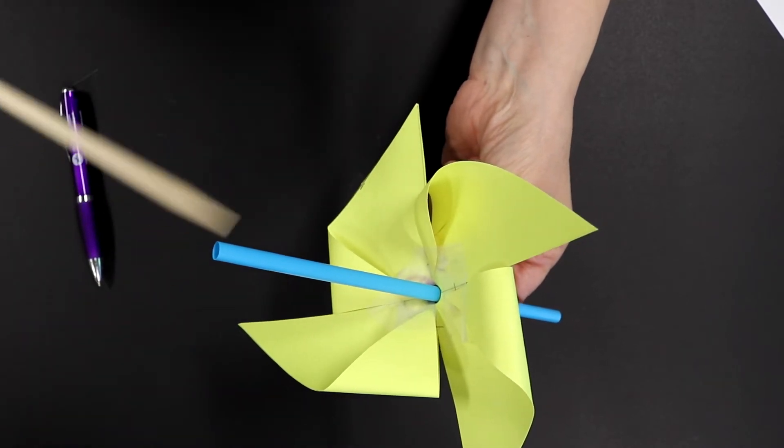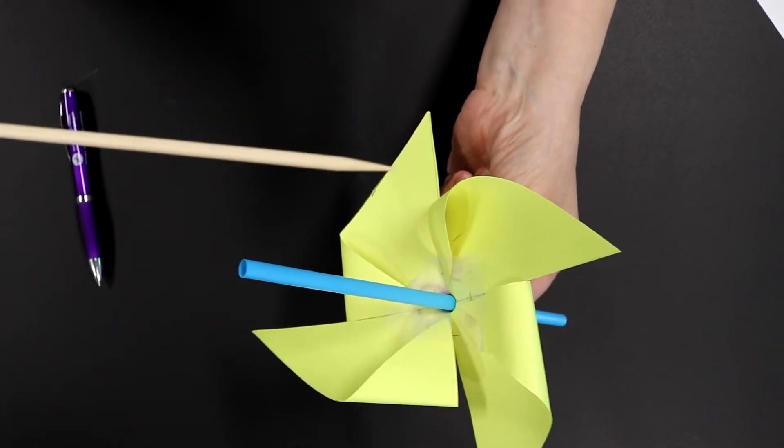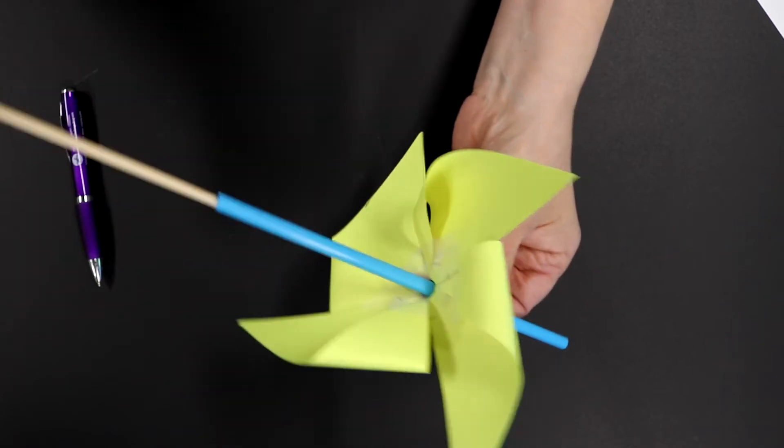Okay, now you're going to put your wooden skewer through the straw so that it can rotate around freely.